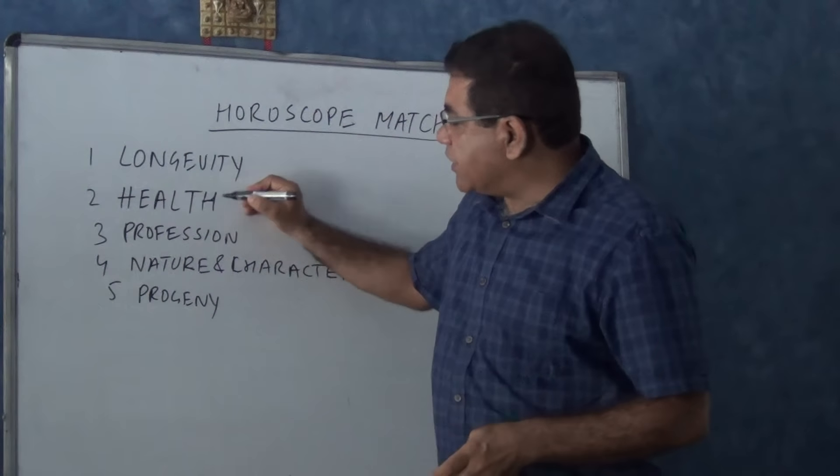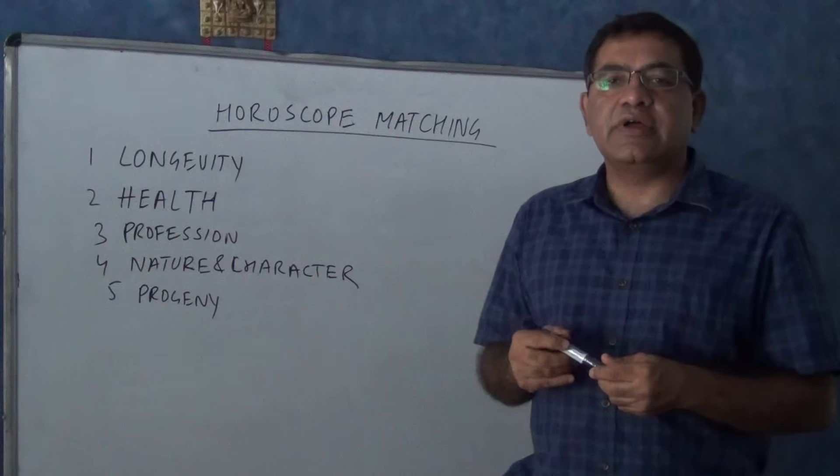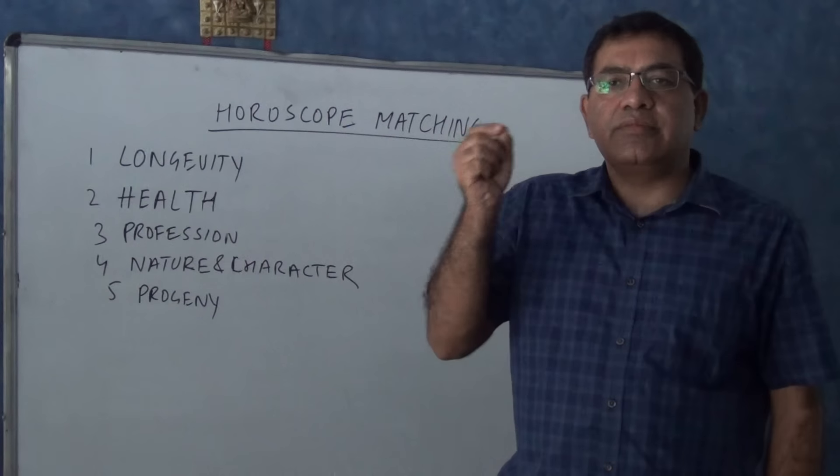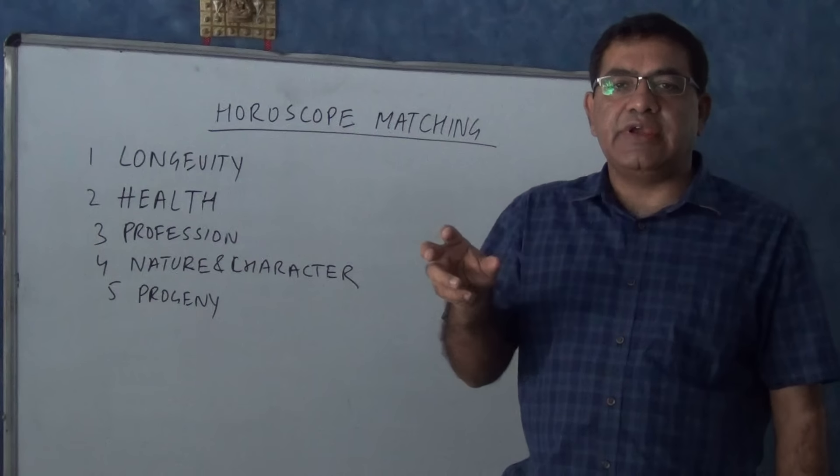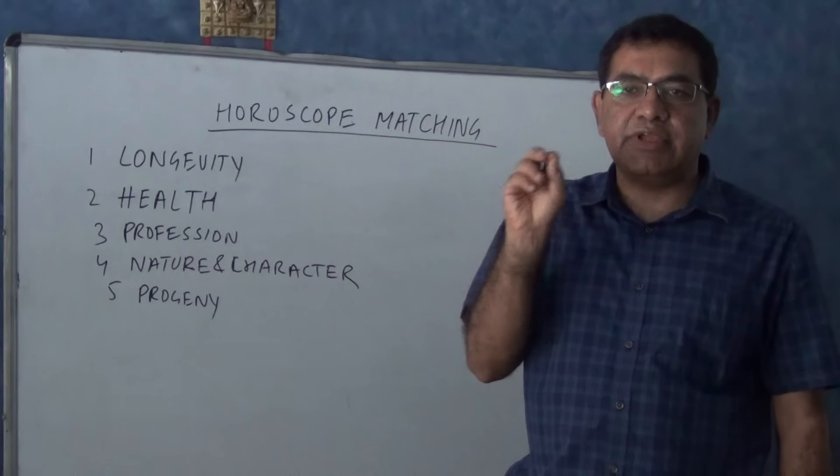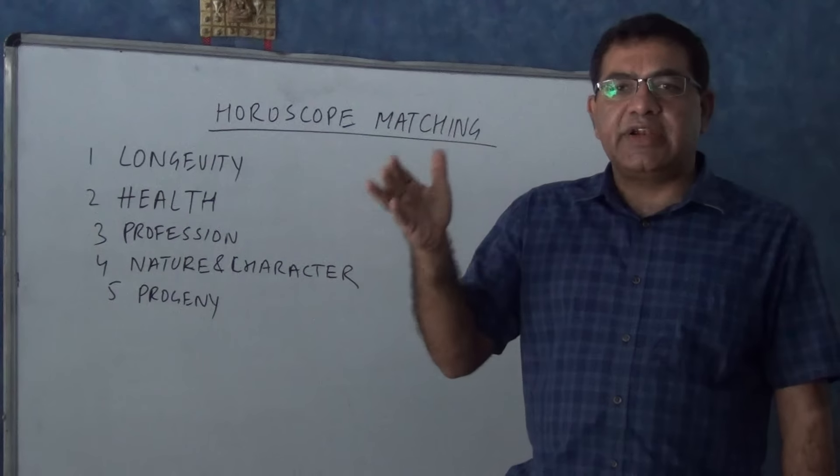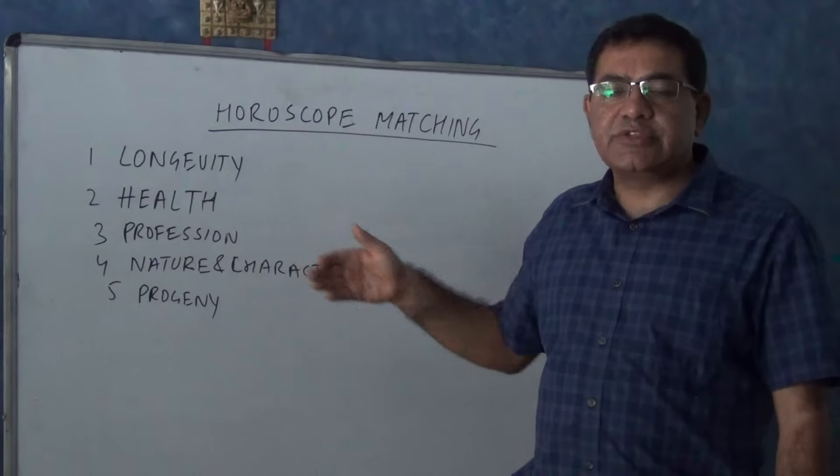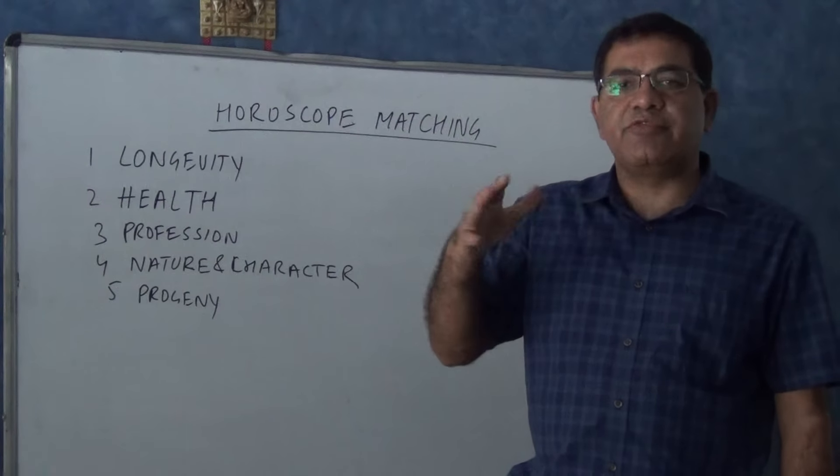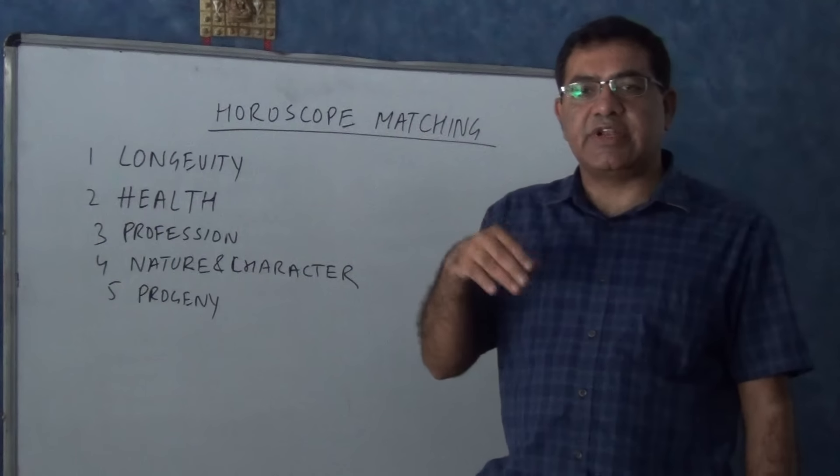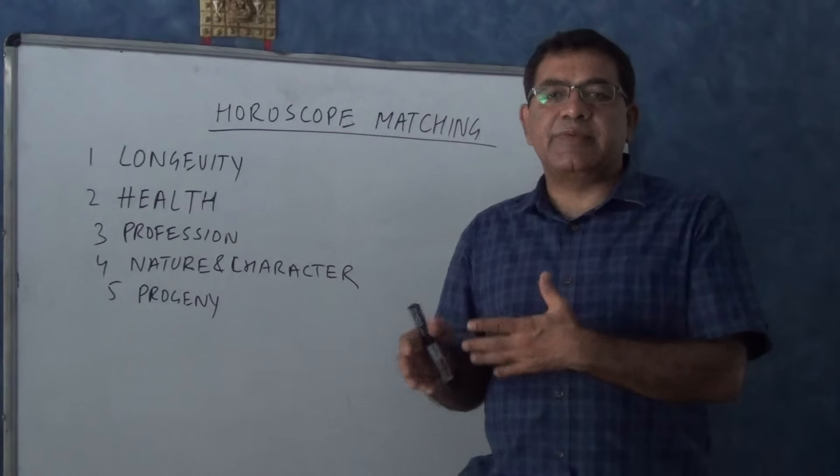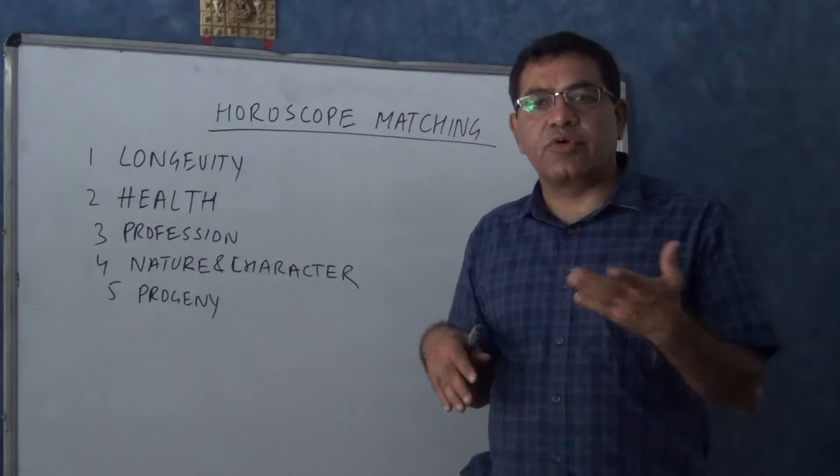Why should profession be good? Because in India, we expect that the male should be the earning member of the family. So his professional life should be perfect. All the planets cannot be positive. If the majority planets are okay, then it is okay. Because the whole life, nobody can have an excellent professional life. There has to be ups and downs in professional life. So if five or six planets are positive, he will have a good professional life.